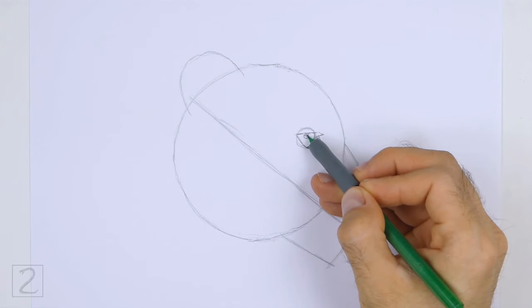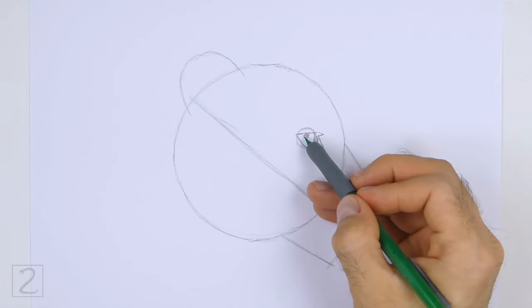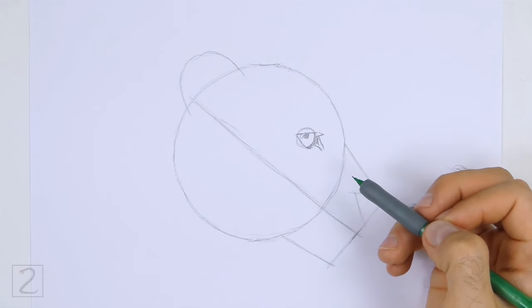Draw the pupil up against the top edge of the eye. To the left of the pupil, draw a tiny circle for a highlight.